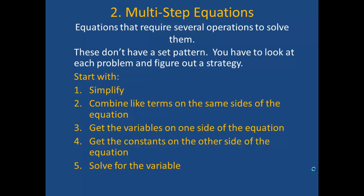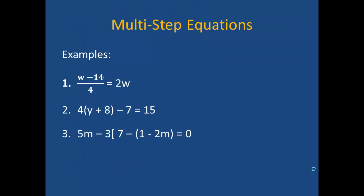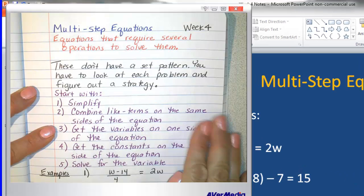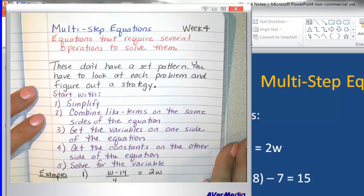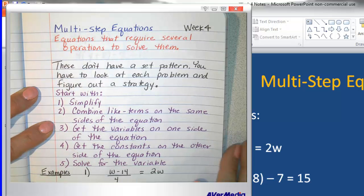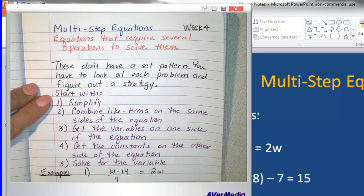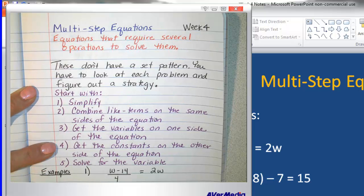First, simplify when possible. Then combine the like terms on the same sides of the equation. Get the variables on one side of the equation, then get the constants on the other side of the equation, and solve for the variable. We are going to do three examples of multi-step equations. In your notebook, you should have copied the information from the slide just shown, which gives you some starting points for solving multi-step equations.